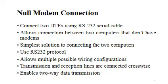The RS232 interface can be established up to a distance of 50 feet. A null modem is a communication method to directly connect two DTEs — that is, two Data Terminal Equipments such as computers, terminals, or printers — using an RS232 serial cable. Null modems allow creation of a connection between two computers that don't have modems via the RS232 protocol, which was originally used to connect telephone modems to a teletype machine.